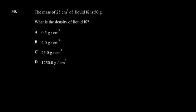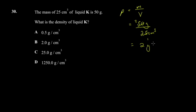Question 30: the mass of 25 cm³ of liquid K is 50 grams. What is the density? Density (ρ) = mass ÷ volume = 50 g ÷ 25 cm³ = 2 g/cm³. The answer is B. That's it for this video — join us in the next one. Thanks for watching!